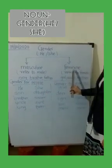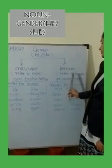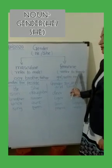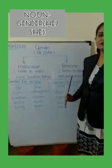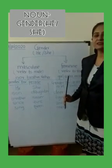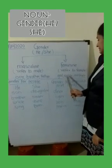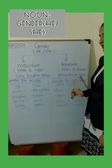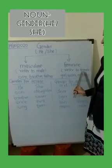In feminine gender, it refers to female. What is female? Female means the girl, sister, and the mother.